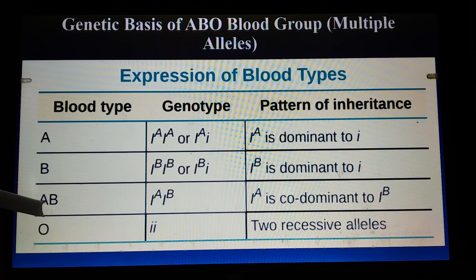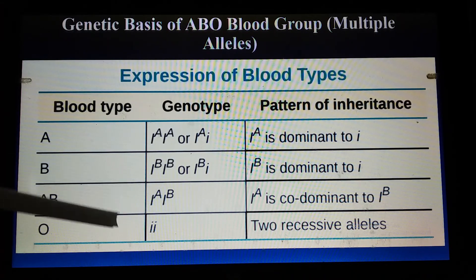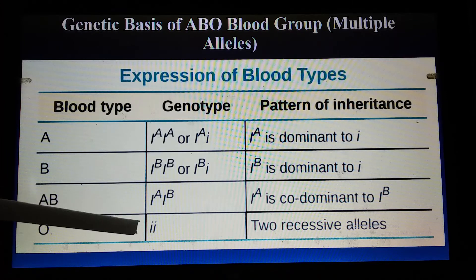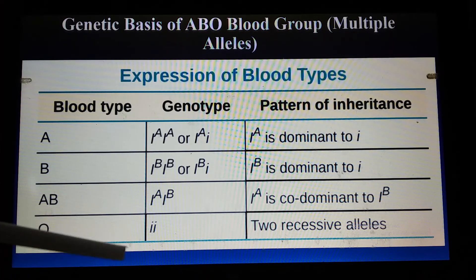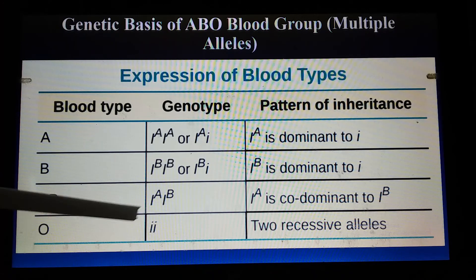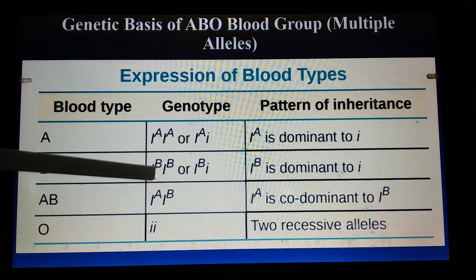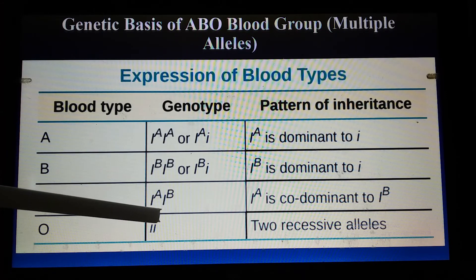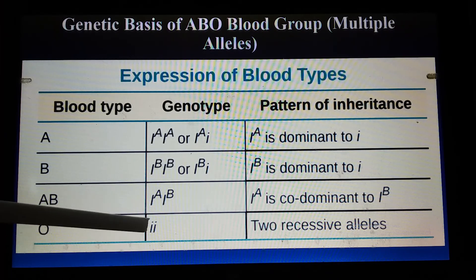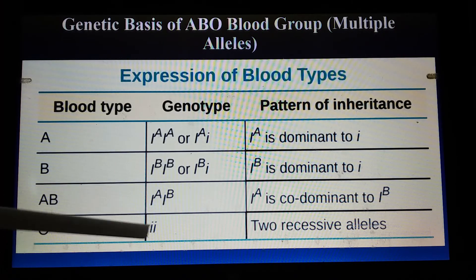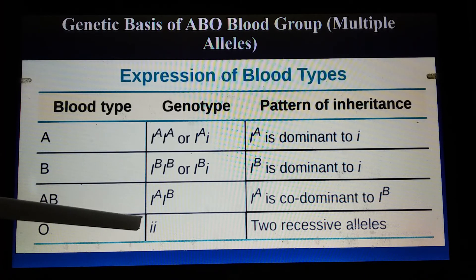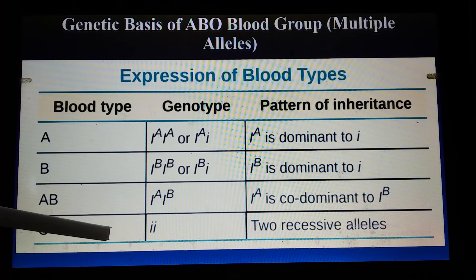The last one is blood group O. In blood group O, there is no antigen A and no antigen B. You can see the genotype of such a person is ii — two small i alleles. This allele will not produce any antigen. This is the recessive form of the allele. While I-A and I-B are both dominant and produce antigen A and antigen B respectively, the recessive ii does not produce any antigen. If these two recessive alleles are present, the person will be blood group O with no antigens A or B.